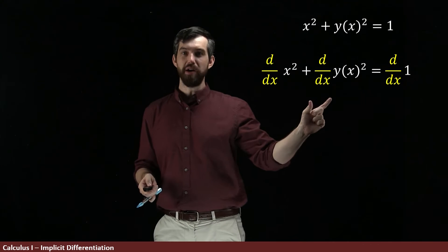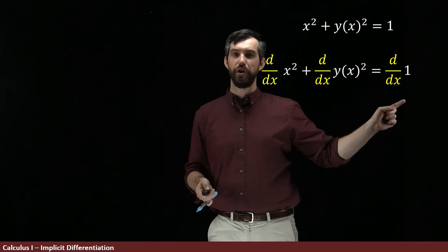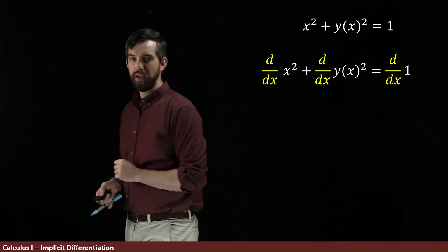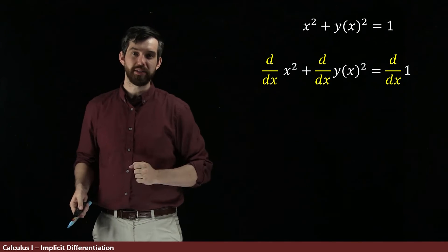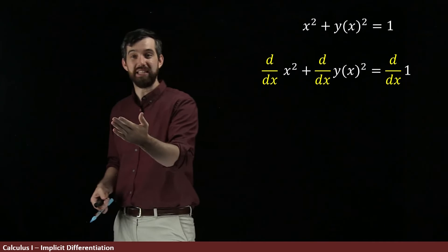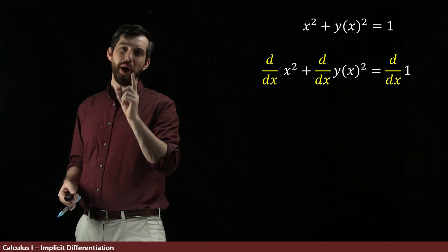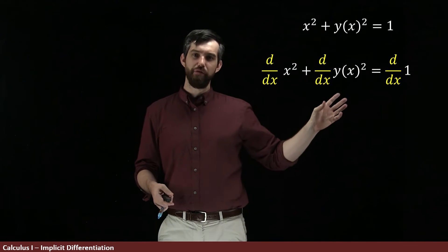So let's see what happens if I do that. So I'm taking the derivative of the x squared, the derivative of the y squared, and the derivative of the 1. Now the derivative of the x squared, that's entirely reasonable. It's just 2x. The derivative of the 1, we know what that is. That's just 0.